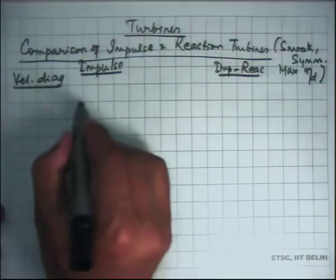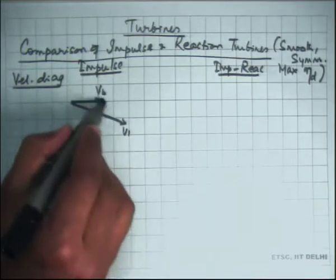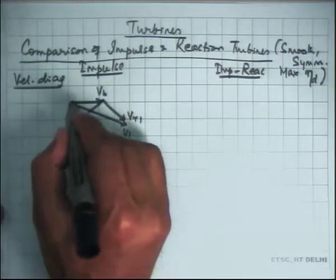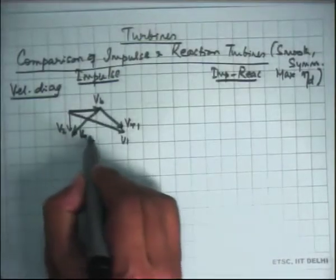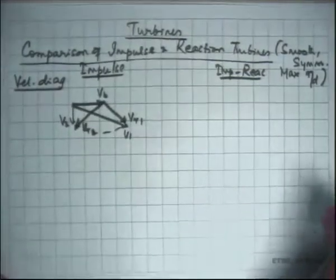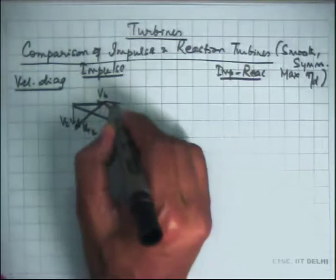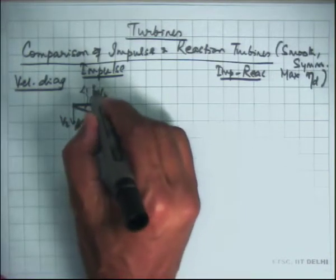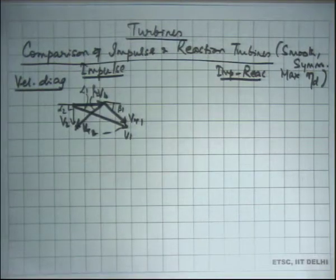What does the velocity diagram of the impulse turbine look like? We have VB, V1, Vr1, Vr2, and V2. If you recall, the length of Vr1 and Vr2 remains the same — it is just rotating one to get the other. The angle here is beta 1, the angle here is alpha 1, the angle here is beta 2, and this is alpha 2. In the case of maximum efficiency, alpha 2 would be 90 degrees.